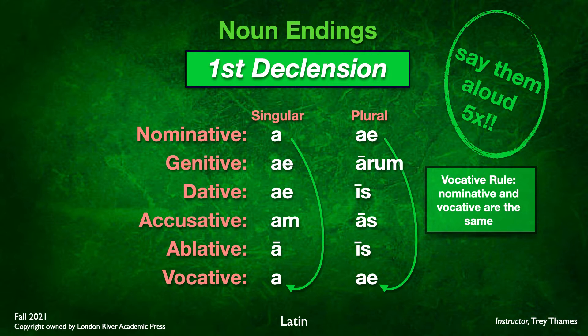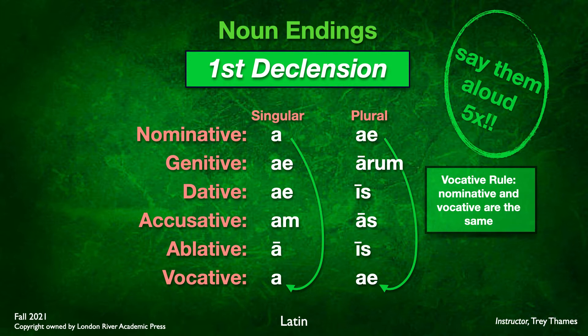These are your first declension noun endings. You need to learn them — practice them over and over, make flashcards. You really have to have these endings down. Let's do them together: a, ae, ae, am, a, a, ae, arum, is, as, is, ae. You can get faster and faster as you practice, but you need to have these endings memorized.